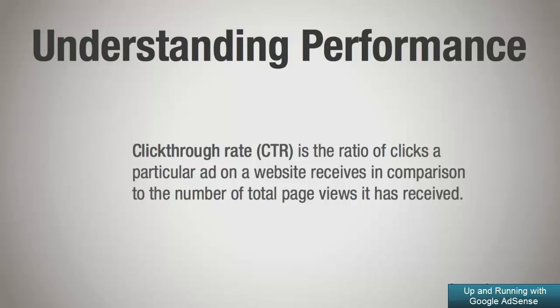Click through rate is the ratio of clicks a particular ad on a website receives in comparison to the total number of page views it has received. So for example, if you receive 100 page views on a certain advertisement and it was clicked once, your click through rate is going to be 1%.